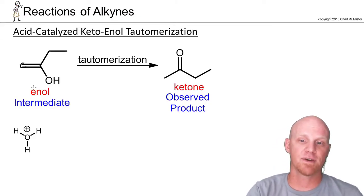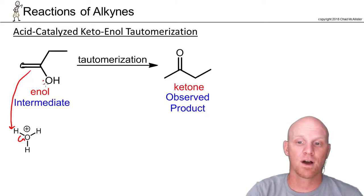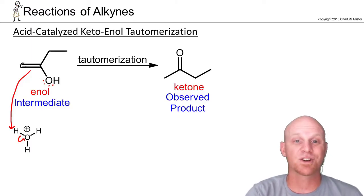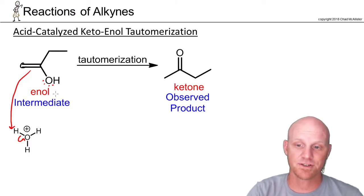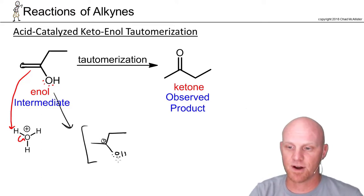Looking at the acid-catalyzed hydration mechanism, the first thing we need to do is protonate. The pi electrons here are going to come and grab a proton. Each can only have one bond, so the other one has to break. We often show the oxygen electrons coming down at the same time, but I'll show both resonant structures here. As a result of gaining that hydrogen, we now have this carbocation, which is stabilized by resonance with the lone pairs of electrons from the oxygen.